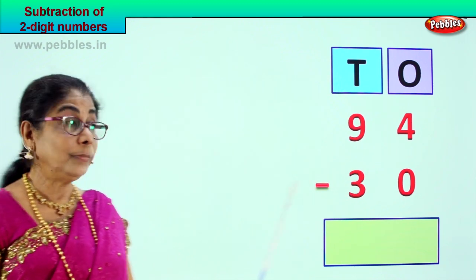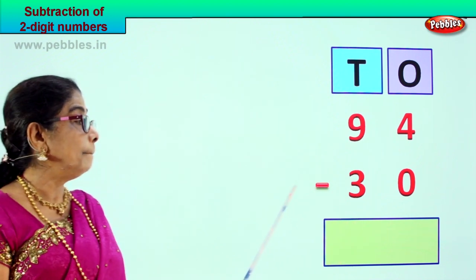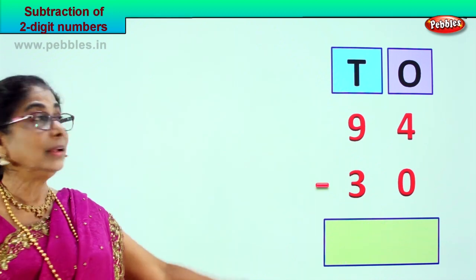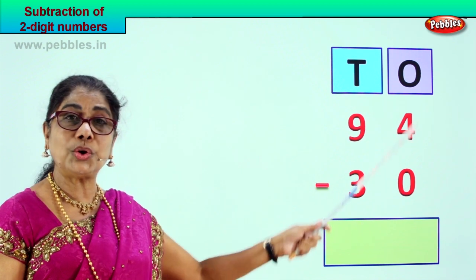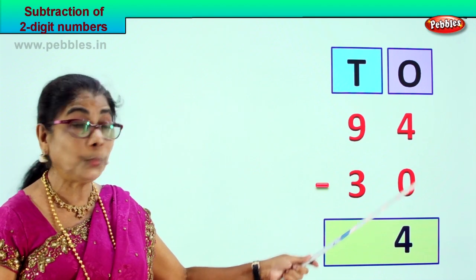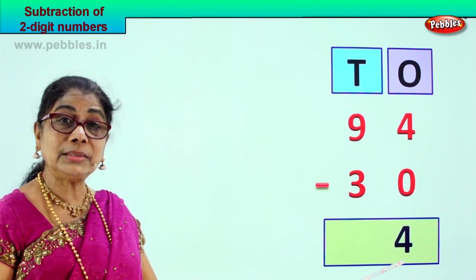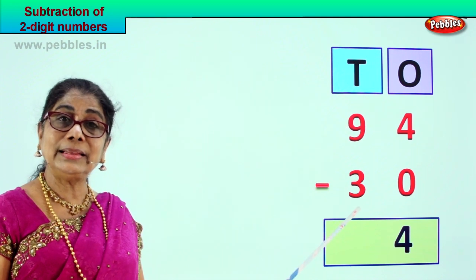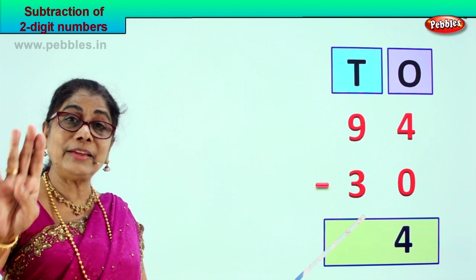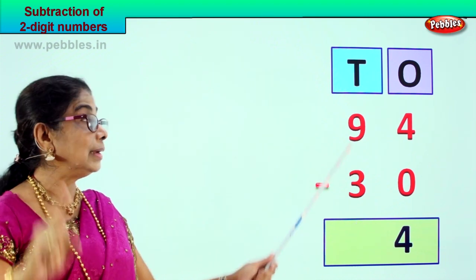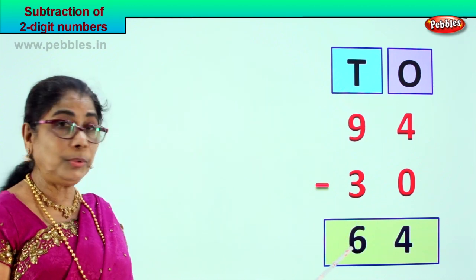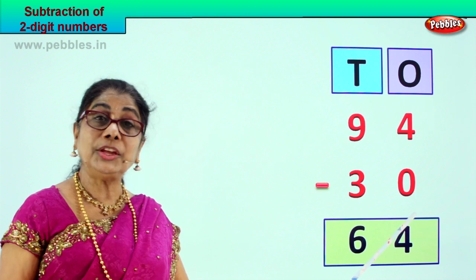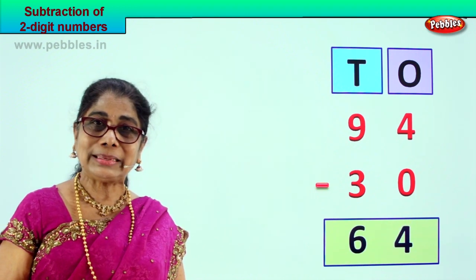Ninety-four take away thirty. Nine tens, four ones minus three tens, zero ones. Let's find the answer. Ones place: four minus zero — answer is four itself. Tens place: nine take away three — three, four, five, six, seven, eight, nine — that is six. Nine minus three is six. Ninety-four minus thirty, your answer is sixty-four.